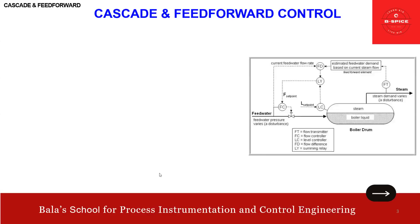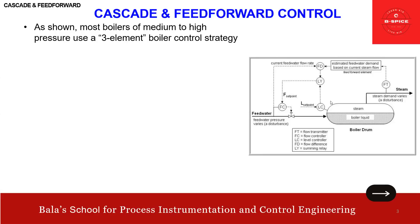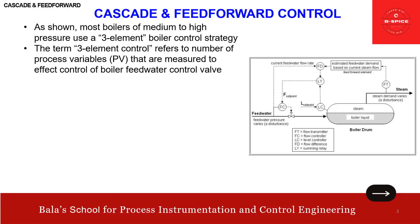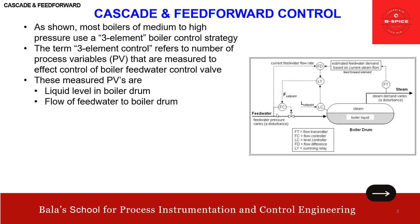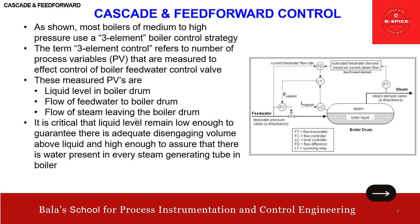Most boilers of medium or high pressure use a three-element boiler control strategy: one level and two flows. The term 'three-element control' refers to the number of process variables measured to affect control of the boiler feed water control valve. Those three are: liquid level in the boiler drum, flow of feed water to the boiler drum, and flow of steam leaving the boiler drum — three elements, three PVs.